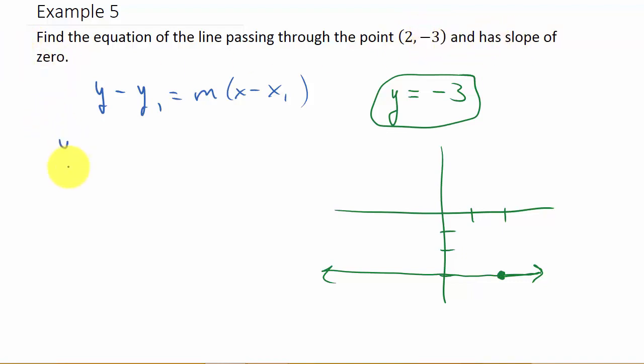So, I've got y minus negative 3, minus a negative is positive, so that's plus 3 equals 0 times x minus 2. Well, 0 times x is 0, 0 times negative 2 is 0, so that just gives me y plus 3 equals 0. And then I subtract 3 from both sides, so I get y equals negative 3. You see, it's the same thing either way.